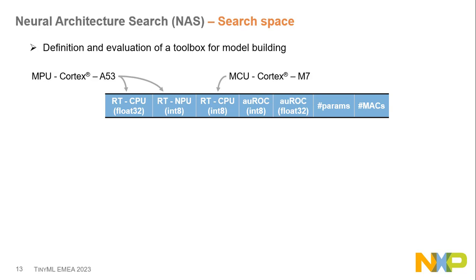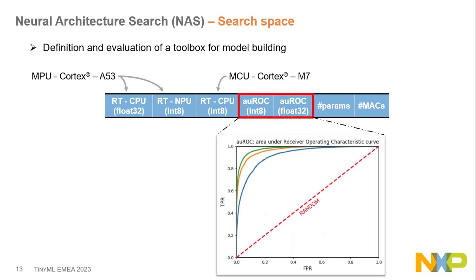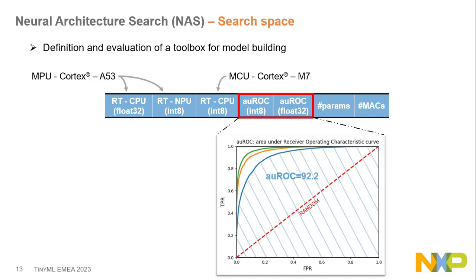Our metrics are response time per inference frame on both MPU and MCU. Our key accuracy metric is the area under the ROC curve (AUC), which measures the trade-off between true positive rate and false positive rate. We also track the number of parameters and the number of multiply-accumulate operations (MACs).